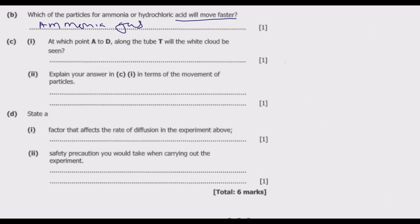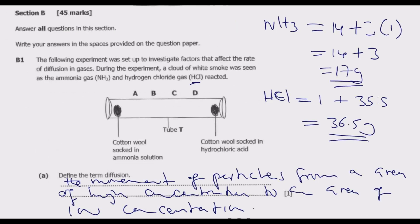Part C, roman numeral 1: at which point A to D along the tube T will the white cloud be seen? So along this tube, where will the cloud be seen? We know that in terms of weight, ammonia is below half the weight of hydrochloric acid, so it's going to be moving at more than twice the speed of hydrochloric acid.